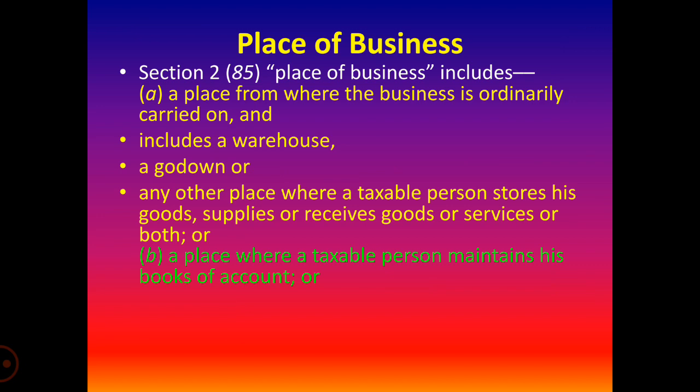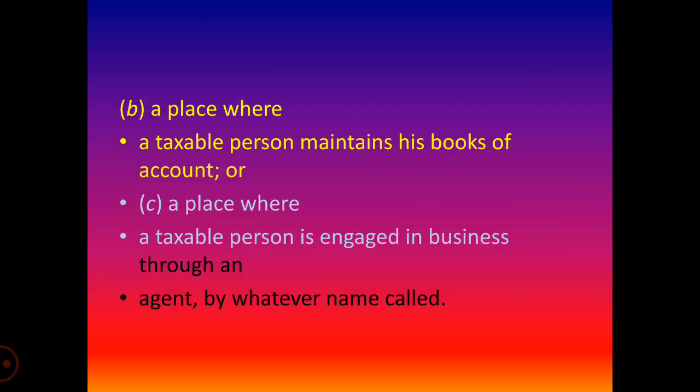Sub-clause (b): Place of business includes a place where a taxable person maintains his books of accounts. This means a place where the person keeps, maintains, and updates his books of accounts related to the supply or receipt of goods or services or both — or where he ordinarily keeps his books of accounts.